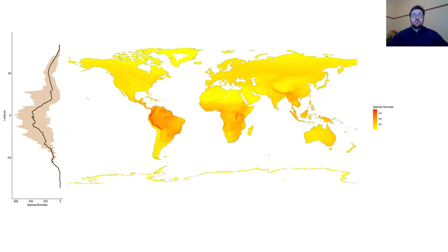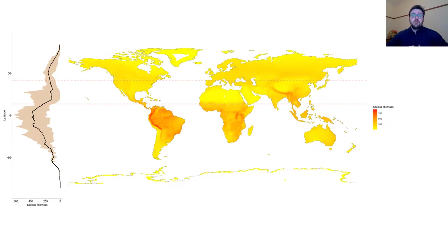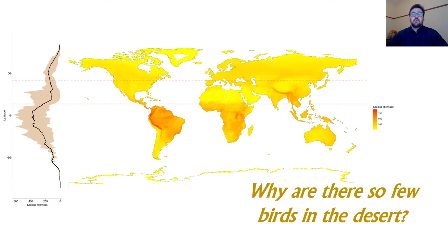This has led many researchers to wonder why there are so many birds in the tropics. However, there is another side to this coin, which is that richness doesn't just steadily drop from the tropics towards the poles, but there is a noticeable dip around the deserts, especially in the northern hemisphere, though this decline in bird diversity in deserts can also be seen to a lesser degree in the southern hemisphere. This leads me to ask the complementary question: why are there so few birds in the desert?